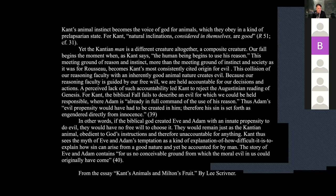A perceived lack of such accountability led Kant to reject the Augustinian reading of Genesis. For Kant, the biblical fall fails to describe an evil for which we could be held responsible, where Adam is already in full command of his reason. Thus, Adam's evil propensity would have had to be created in him, so his sin is set forth as engendered directly from innocence. If the biblical God created Adam and Eve with an innate propensity to do evil, they would have no free will to choose it — they would remain like the Kantian animal, obedient and unaccountable. Kant sees the myth of Adam and Eve's temptation as explaining how difficult it is to account for how sin can arise from a good nature.